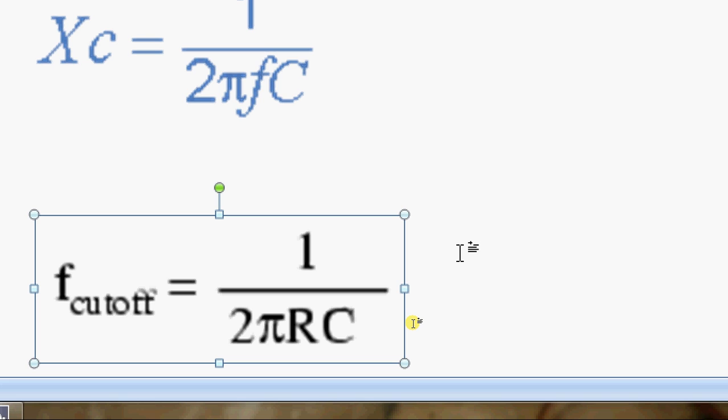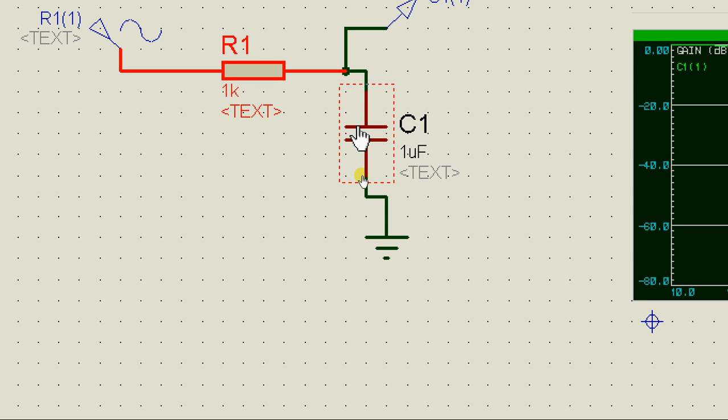Now one last thing is what type of capacitor to choose. Now you know capacitors can be classified as electrolytic and ceramic capacitors. And electrolytic capacitors can go up to a thousand microfarad whereas ceramic capacitors can go up to 0.1 microfarad.